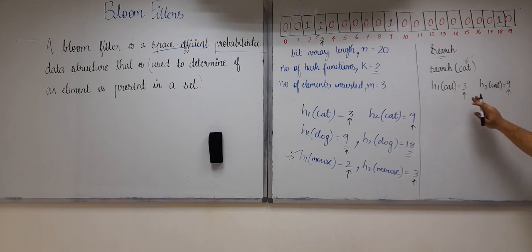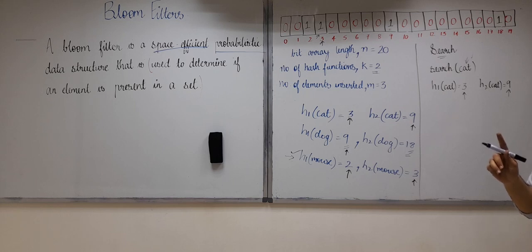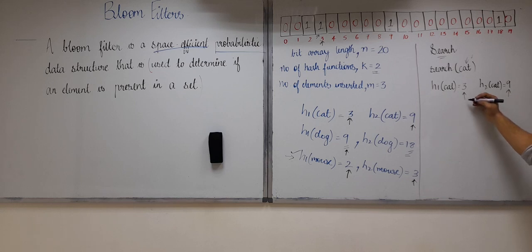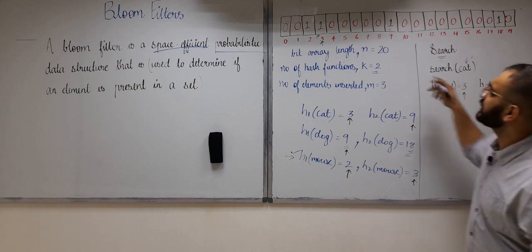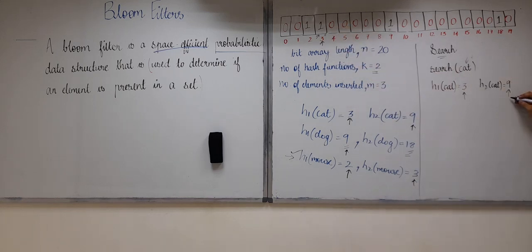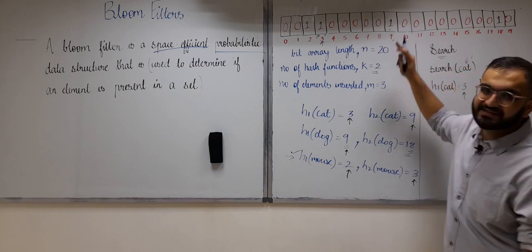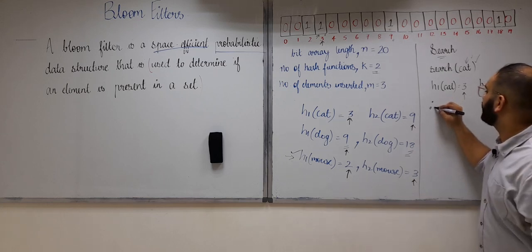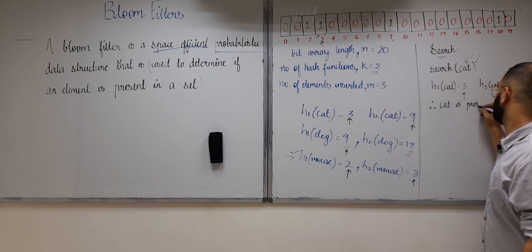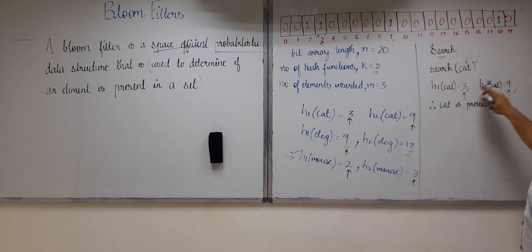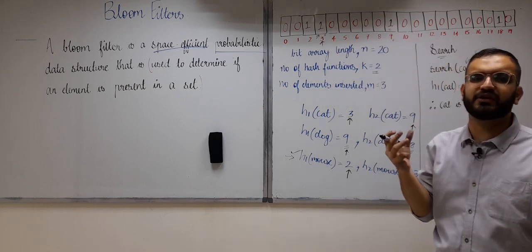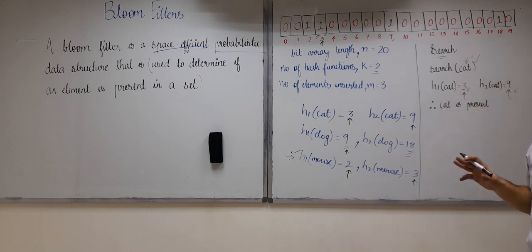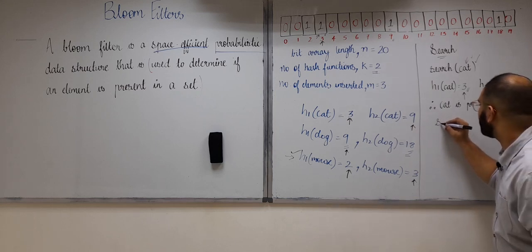If the bit value at both indexes 3 and 9 is 1, that means 'cat' is present in the bloom filter. We check index 3 — the bit value is 1. We check index 9 — the bit value is also 1. Therefore, cat is present in our bloom filter. If either index 3 or index 9 had a value of 0, that would imply the word cat is not present.